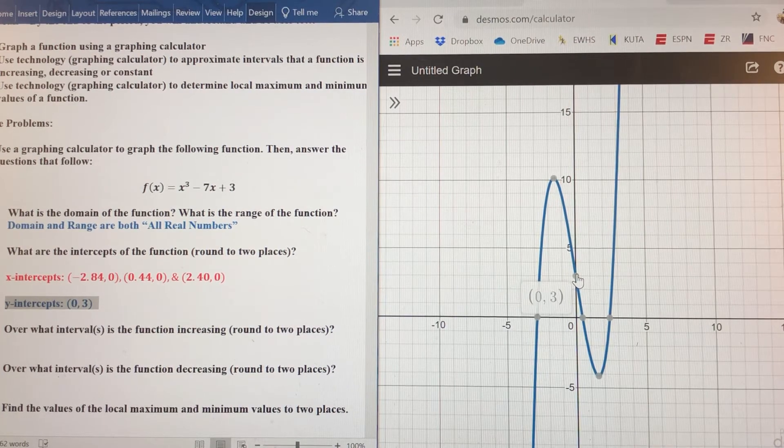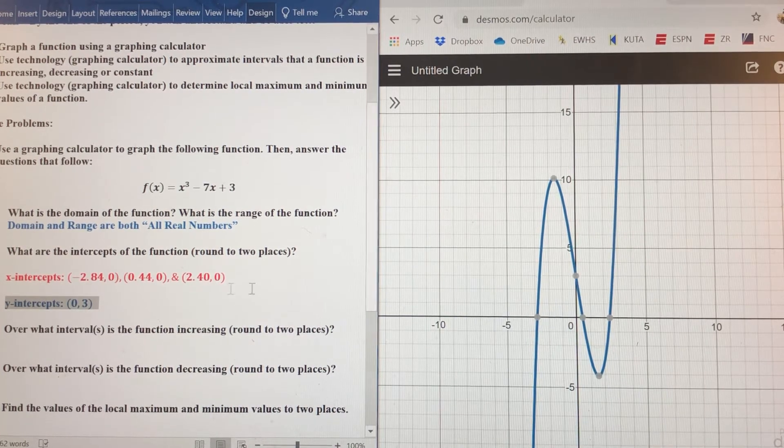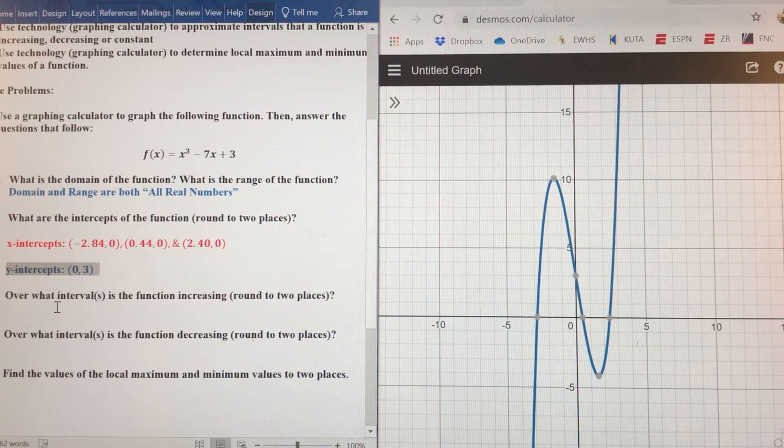And the last one is going to be at about 2.40 comma zero. So those are the three x-intercepts. The y-intercept is going to be at 0 comma 3. So again, it's real easy to pick out these key points from the graph on Desmos, especially for a function like this.